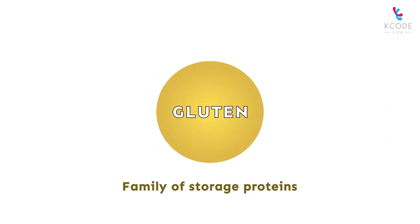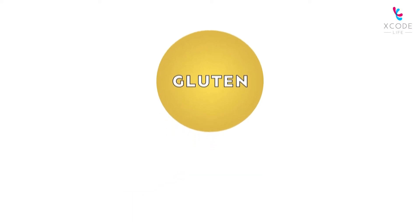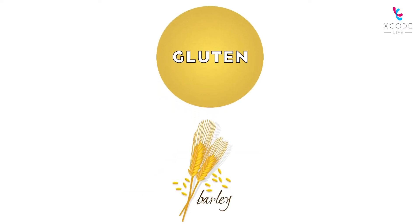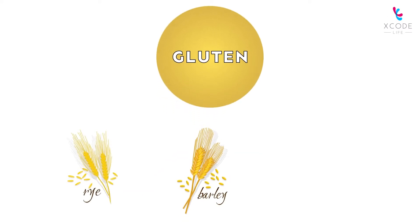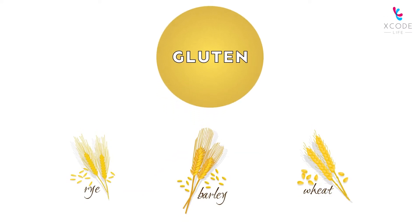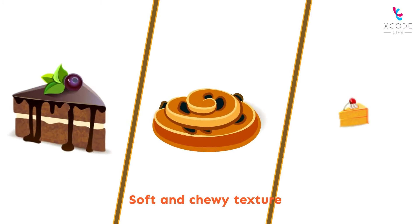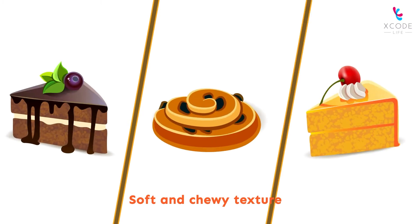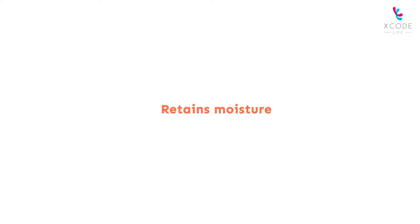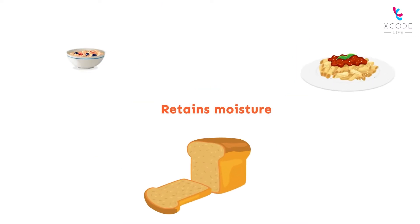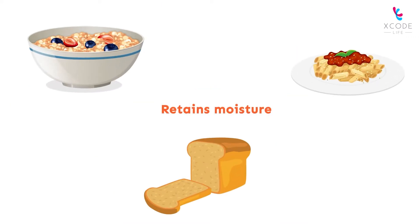Gluten is a family of storage proteins found in various grains such as barley, rye, and wheat. Gluten is responsible for the soft and chewy texture of pastries and baked items. It also retains the moisture in bread, pasta, and cereal.